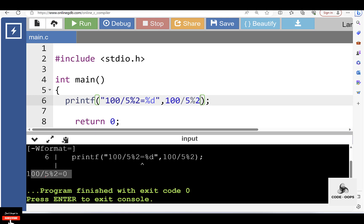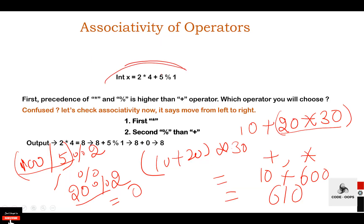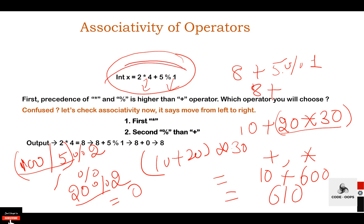Let's see another example: index = 2 * 4 + 5 % 1. Here multiplication and modulus operators have the same precedence. Checking the associativity table, the associativity of multiplication and division operators is from left to right. So multiplication is executed first: 2 * 4 = 8. Then 5 % 1 = 0. So we have 8 + 0, and the final output is 8.